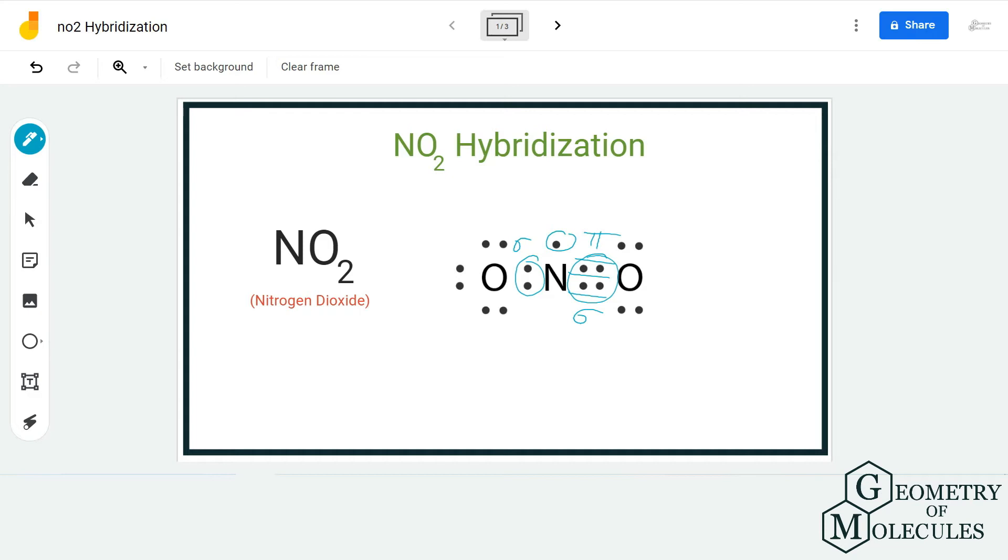For steric number, we consider all the electrons that are forming bonds and the ones that are not forming bonds on the central atom. So here if you see, there are two bonding pairs of electrons on the nitrogen atom.